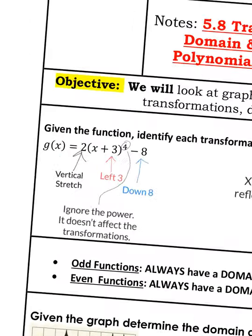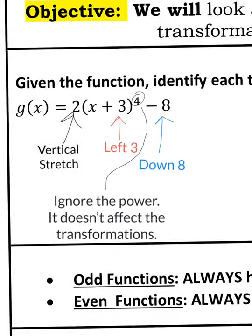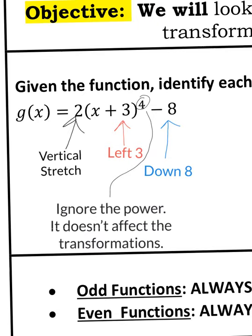Alright, so given the function, identify each transformation. So remember, your transformations, if you multiply by a number bigger than 1 on the outside, it's a vertical stretch. Which, 2 is bigger than 1.